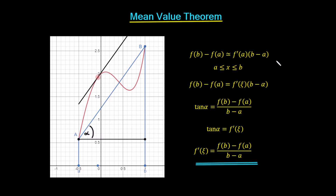We're going to show a little graphical proof of this with relation to the graph here, and then we'll see it in the graphical calculator. Let's call the angle that this line makes with the x-axis the angle alpha. We know that tan alpha is y divided by x. The y-distance here is f of b minus f of a, and the x-distance is b minus a, so tan alpha equals f of b minus f of a all over b minus a — that's just simple trigonometry.